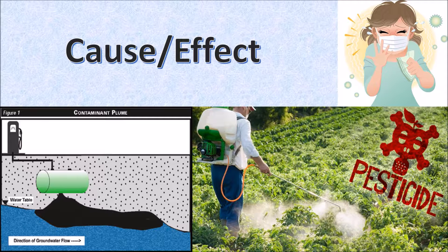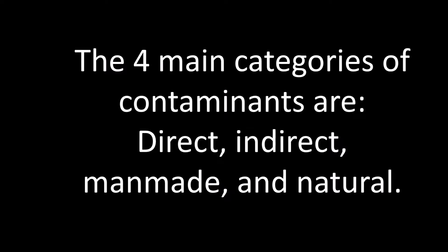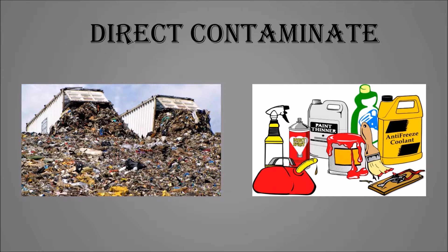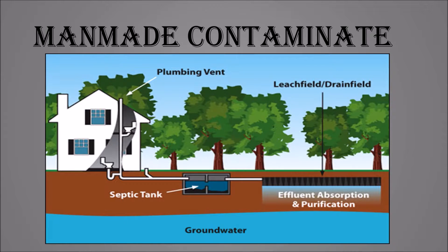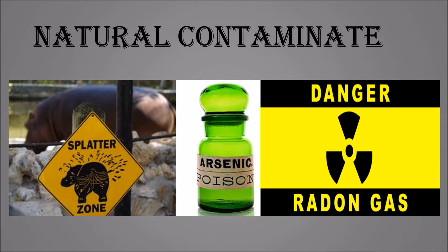It is very important to be able to recognize the sources of groundwater pollution. There are four main categories of pollutants: direct, indirect, man-made, and natural. Direct contaminants such as landfills and hazardous waste are the most common. Indirect contaminants include atmospheric pollutants through evaporation and petroleum fuels such as gasoline leaking into our groundwater. Man-made contaminants include septic systems filled with sewage and chemicals used on roads, in lawns, and around the home. Natural contaminants include animal waste, arsenic, and radon, which are both naturally present in some rocks.